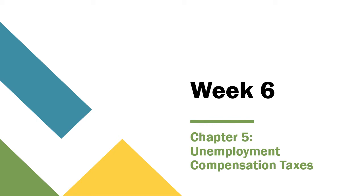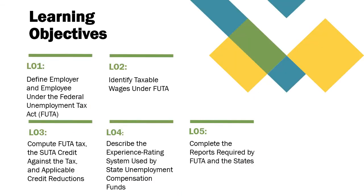This presentation covers Chapter 5, Unemployment Compensation Taxes. The learning objectives are to define employer and employee under the Federal Unemployment Tax Act (FUTA), to identify taxable wages under FUTA, to compute FUTA tax and the SUTA credit against the tax and applicable credit reductions, to describe the experience rating system used by state unemployment compensation funds, and to complete the reports required by FUTA and the states.